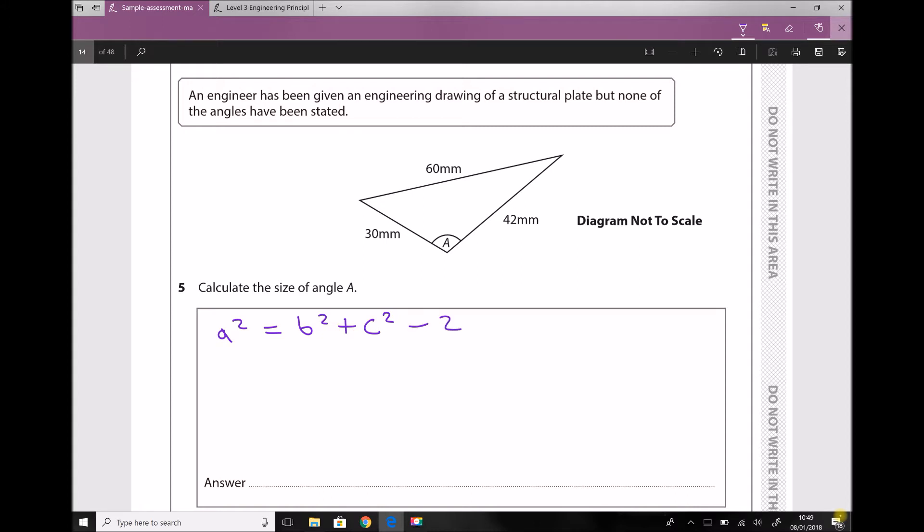The thing we're trying to find is angle A. If angle A is the angle we're trying to find, then lowercase a is the side that's opposite the angle. We have a here, and it doesn't actually matter which way round we assign b and c.